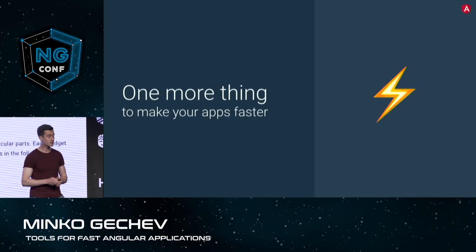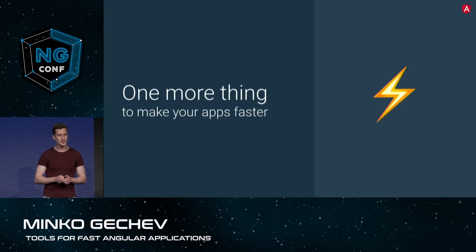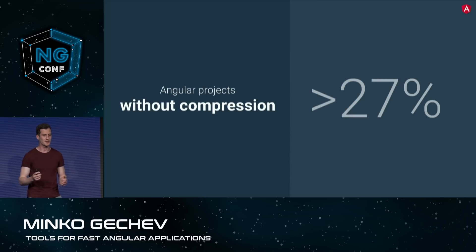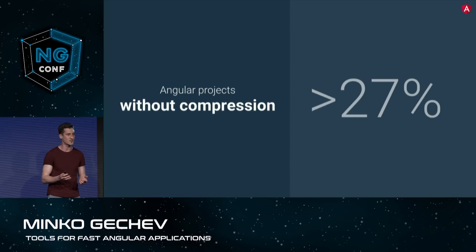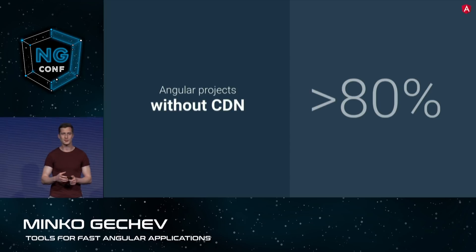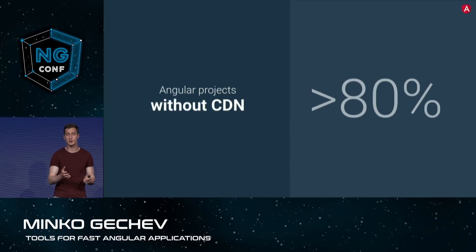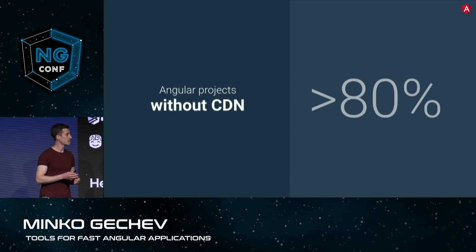There is one more thing we have been working on to make sure you're shipping very fast web applications. We noticed some very low-hanging fruits that people are not taking advantage of. For example, more than 27% of Angular applications are not using content compression for their static assets — such as SVG images or JavaScript. An even higher percentage of Angular applications are not using CDNs. A CDN is an extremely convenient way to provide your static assets from the most geographically close location to your users — for example, pushing assets to a CDN edge in Europe for European users reduces latency significantly compared to downloading from the U.S.